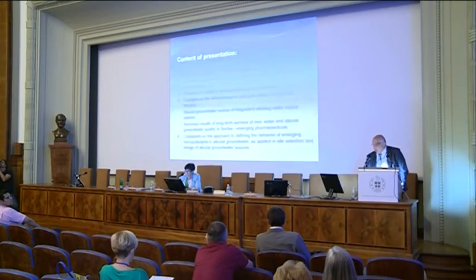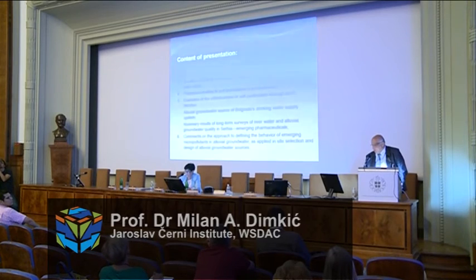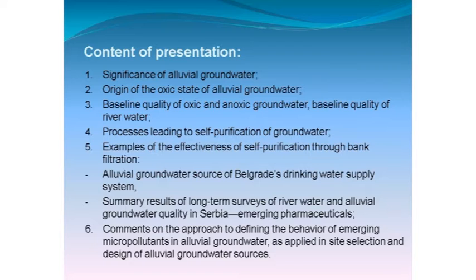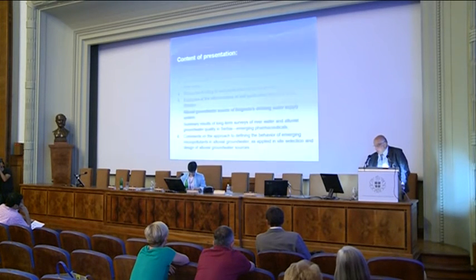The content of this presentation: I would like to talk a little bit about the basic quality and the influence of oxic state on the processes of self-purification in the groundwater, especially in alluvial aquifers. Second, some examples of effectiveness of self-purification for Belgrade waterworks, and also some results of long-term surveys of different big rivers and alluvial aquifers in Serbia. At the end, comments on the approach to defining the behavior of micropollutants in alluvial aquifer groundwater as applied in site selection and design of alluvial aquifer groundwater sources.